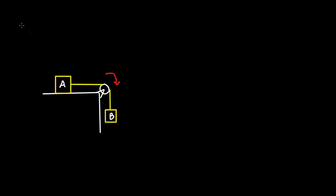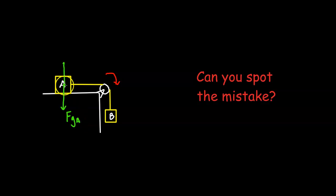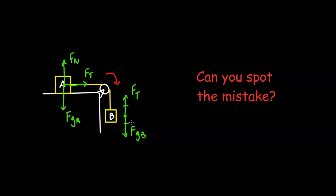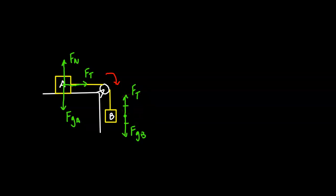Now I'm going to draw the forces acting on a modified Atwood's machine, and I want you to tell me if you can spot the mistake I'm making. I'm going to assume a frictionless surface and that it is accelerating. You'll notice I put a tick mark for FT and FGB, which means I'm saying they are equal. The error is where I'm stating that FT is equal to FGB. If FT and FGB are balanced, that means it can't be accelerating — but I know it is accelerating.